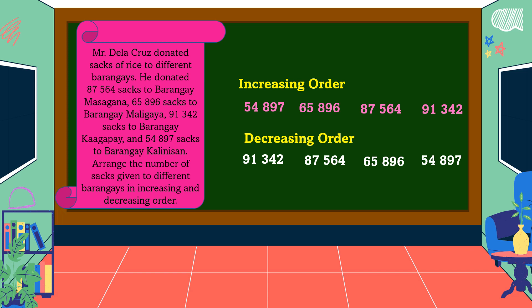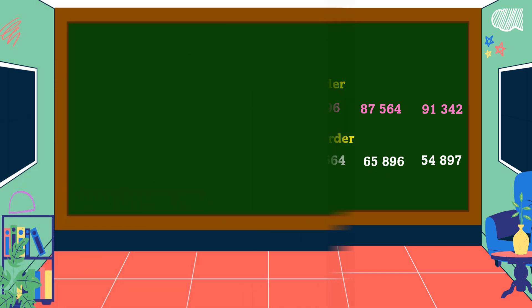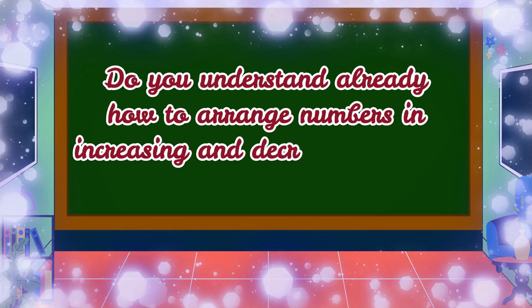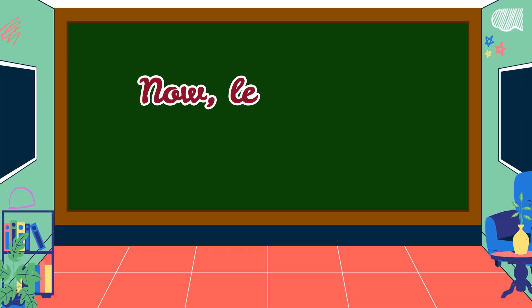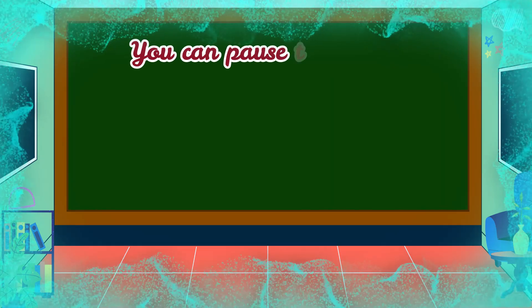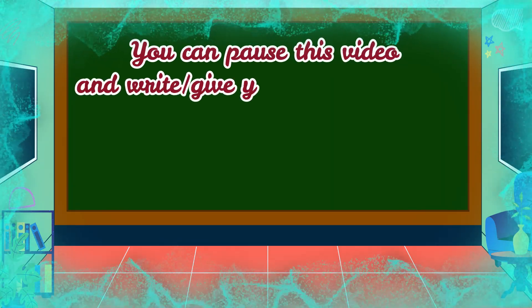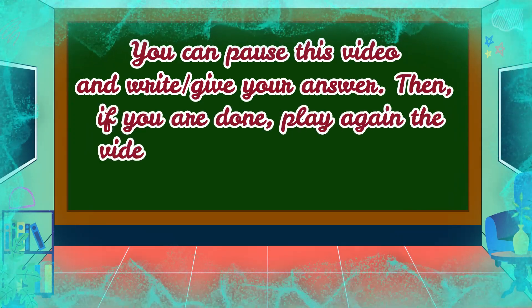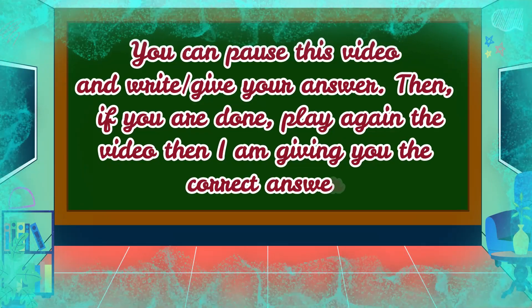This is how we arrange numbers in decreasing order — from the largest number down to the smallest. Do you understand how to arrange numbers in increasing and decreasing order? If yes, congratulations! Now let's have a short exercise. You can pause this video, write your answer, then play the video again and I will give you the correct answer.